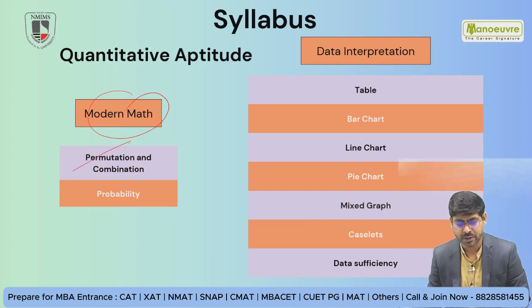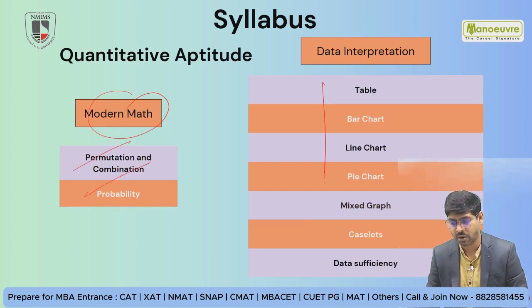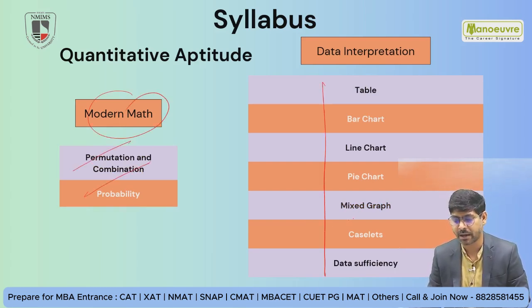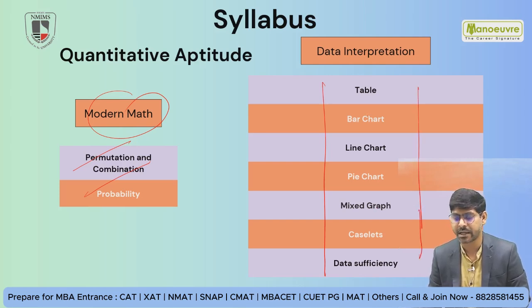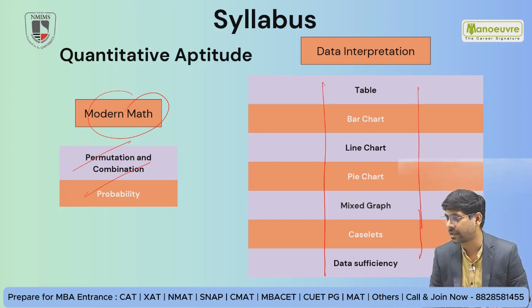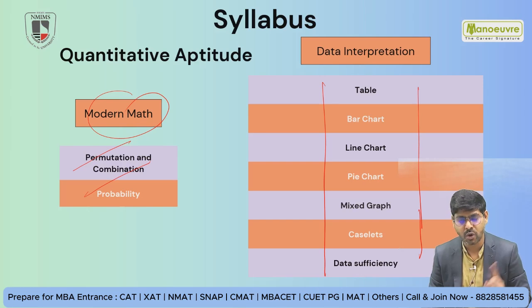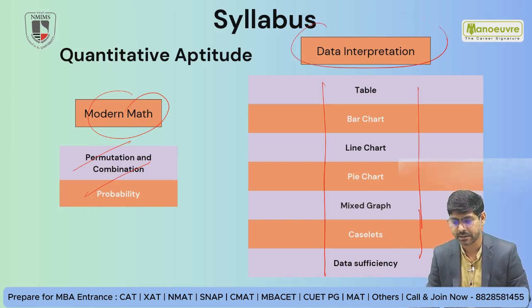Modern math topics include permutation and combination, probability, and data interpretation — covering tables, pie charts, line charts, bar graphs, mixed graphs, data sufficiency, and caselets. These topics you need to prepare properly. The Quant section can be done well with dedicated practice.